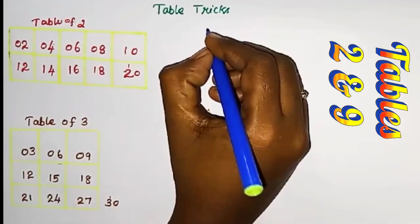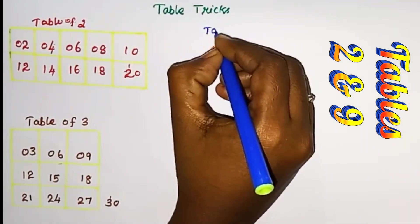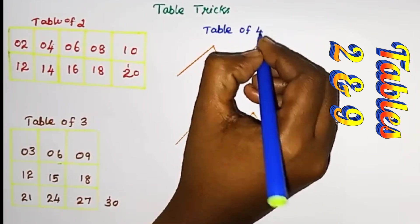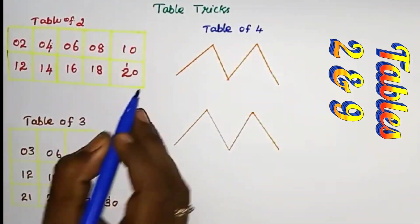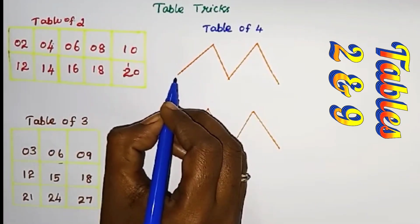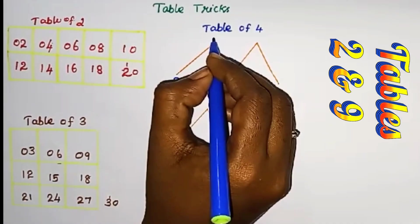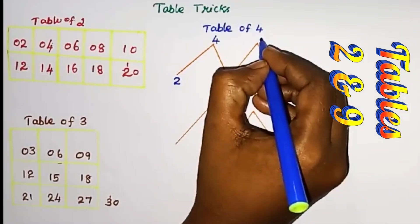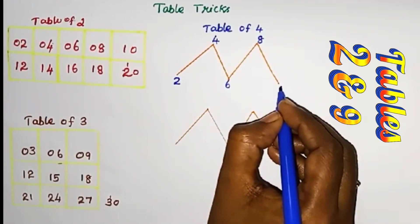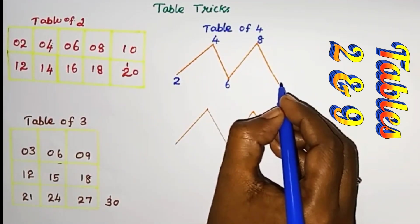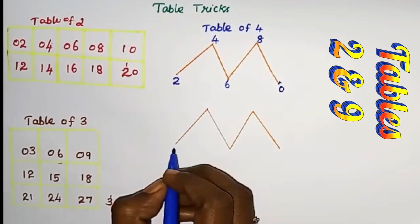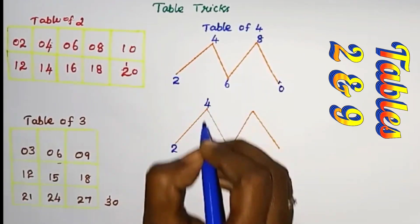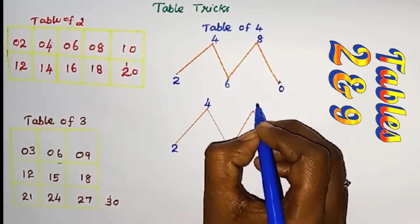Table of 4. Start from here. 5 even numbers: 2, 4, 6, 8, 10. Again same: 2, 4, 6, 8.